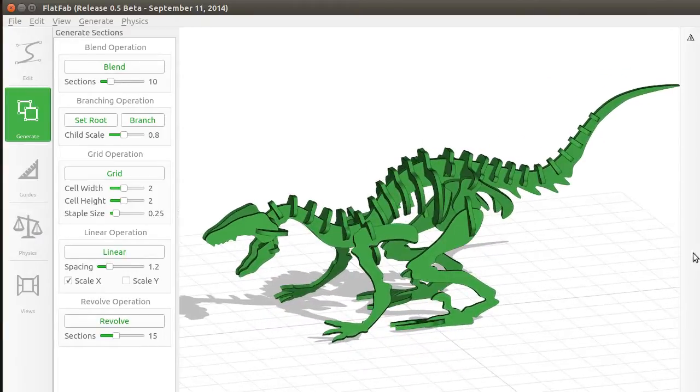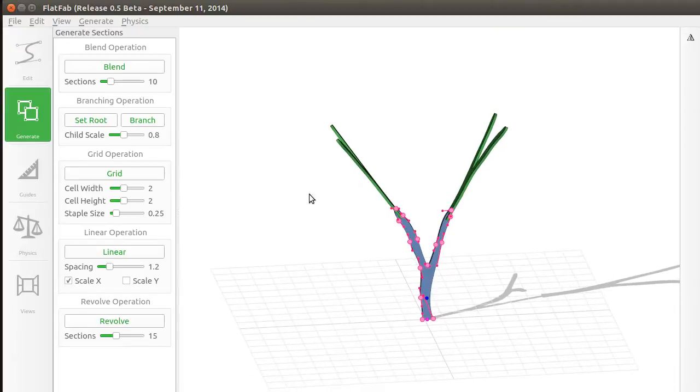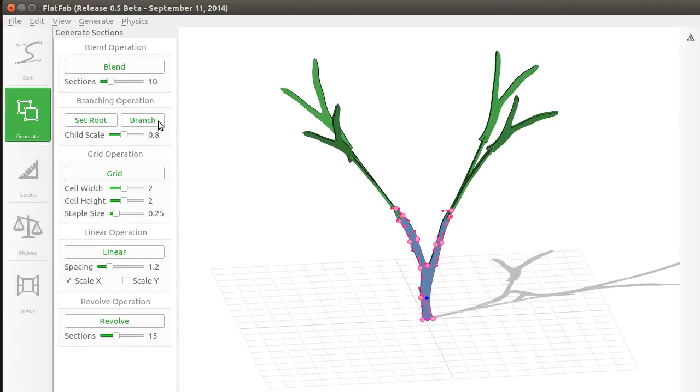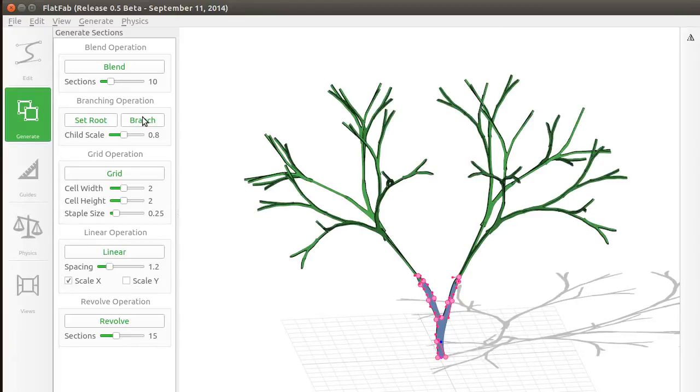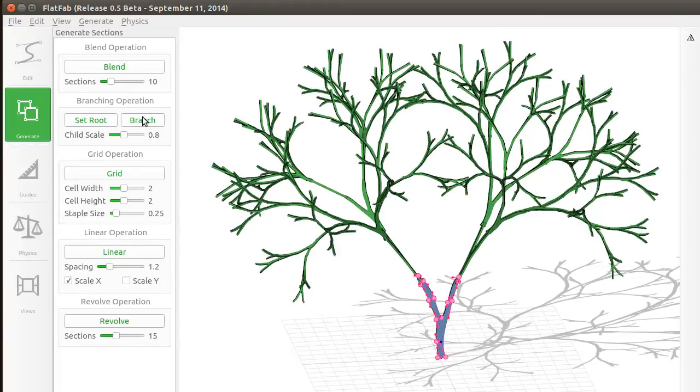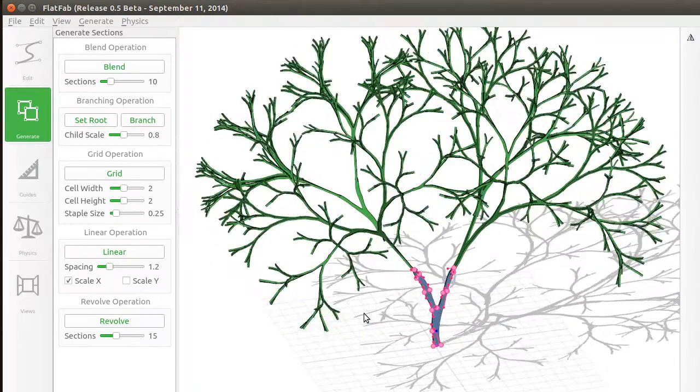The branching operation duplicates the entire tree of planar sections, overriding existing branches connected to the root. The result is that the tree grows deeper by one each level or each time the operation is used. Here we show the interactive creation of a tree structure consisting of about a thousand planar sections.